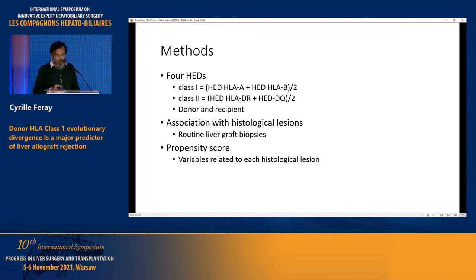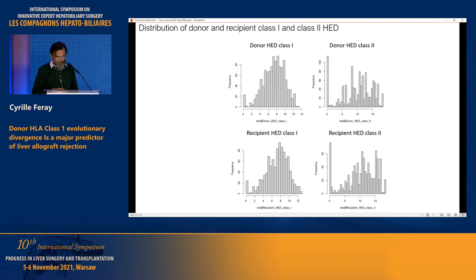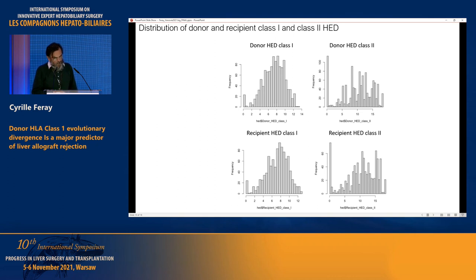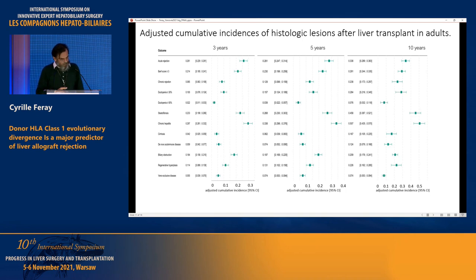We searched for associations with histological lesions using a propensity score analysis. The distribution of HED is not normal — it ranges from zero for homozygotes to a value of 15 for class 1 and 20 for class 2. We studied the cumulative incidence of different histological lesions after liver transplantation in adults: acute rejection, chronic rejection, ductopenia, steatofibrosis, chronic hepatitis, cirrhosis, de novo autoimmune disease, plasma-rich rejections, biliary obstruction, regenerative hyperplasia, and venous occlusive disease.